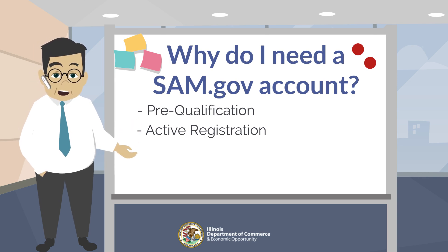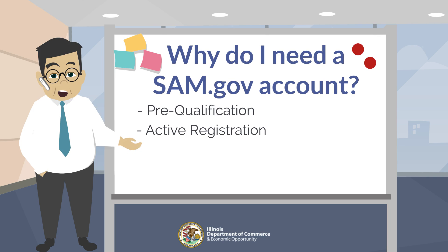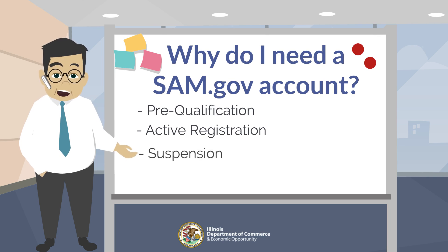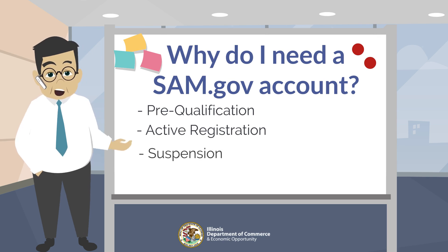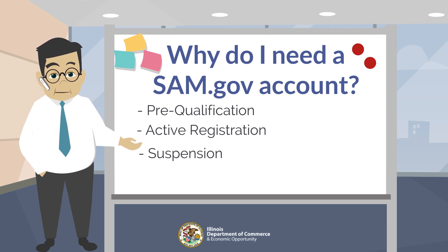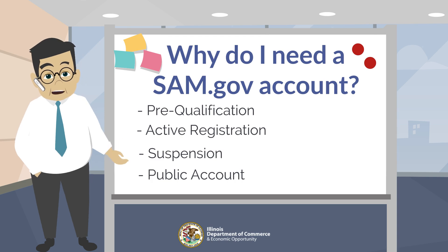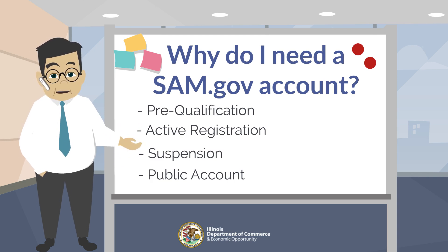The state of Illinois uses SAM.gov to perform federally required verifications including federal debarred and suspended status. When registering with SAM.gov, it is required that your account status is marked public. This allows state agencies to easily access data and allows your SAM.gov registration to sync with the GATA grantee portal.